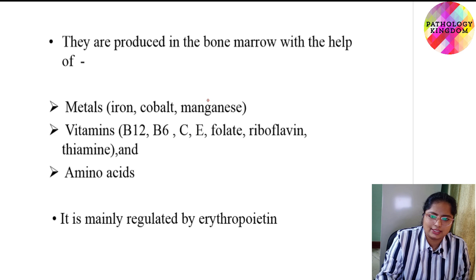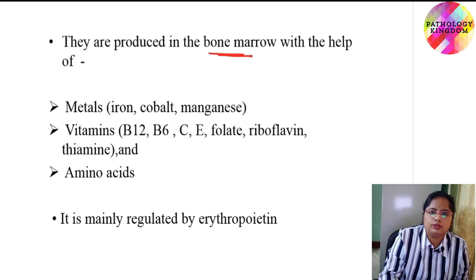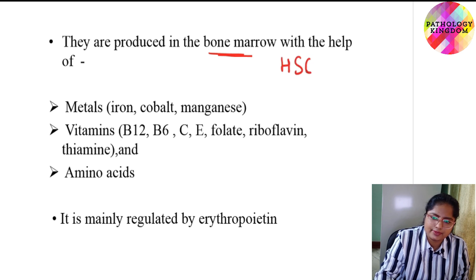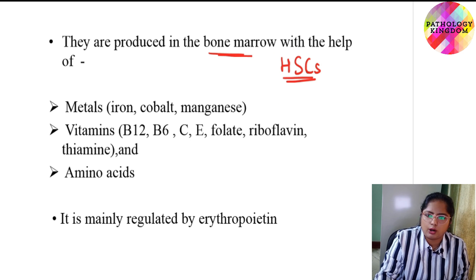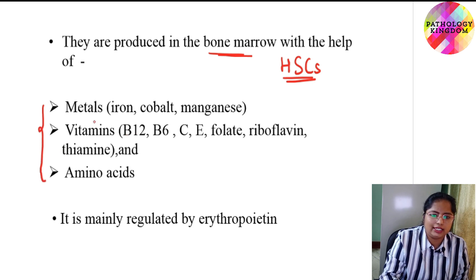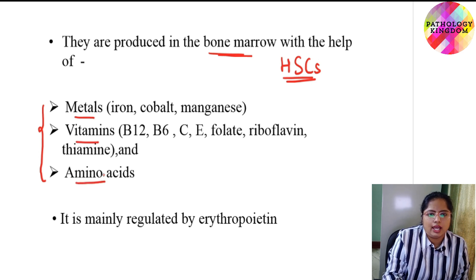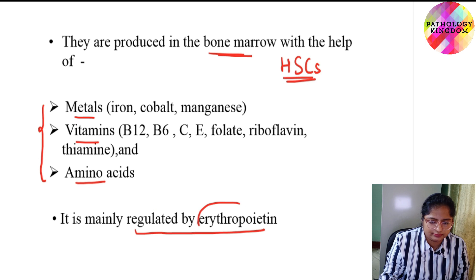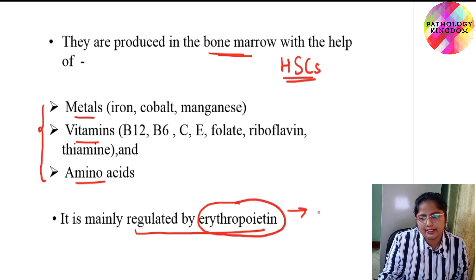All red blood cells are produced in the bone marrow. They are generated from hematopoietic stem cells, which is the common originator of all blood components — RBC, WBC, and platelets. Metals, vitamins, and amino acids all help in red blood cell production. And this entire process is regulated by erythropoietin, which is mainly produced by the kidney.